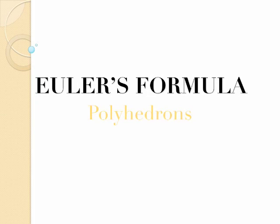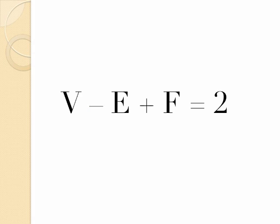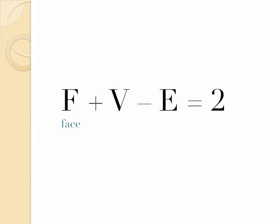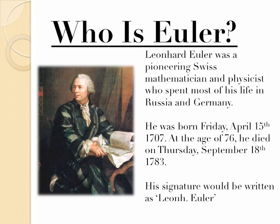All right, this is Euler's formula about polyhedrons again, which is usually called Euler's characteristic. Let's start. So this is V minus E plus F equals 2, which is vertex minus edge plus face equals 2. In elementary school, I learned it as face plus vertex minus edge equals 2. So this is Euler.